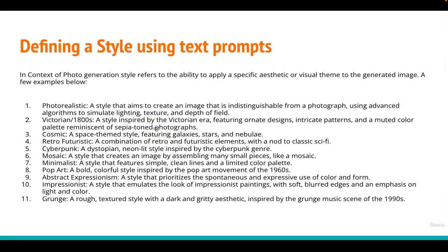In this module, we're going to start exploring how to assign different aesthetics to the output image by using different versions of text prompts by assigning a specific style. Forget the MidJourney AI algo for a second. In context of photo generation, style refers to the ability to apply a specific aesthetic or visual theme to the generated art. In different genres and different passages of time, the images created have been very different — an image from the 1800s Victorian era would have a very different style versus an image with a futuristic theme.